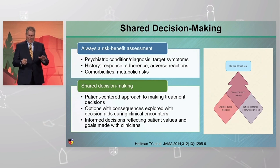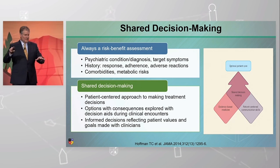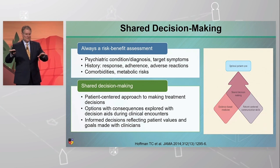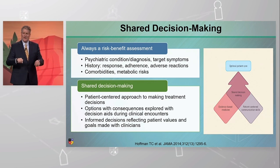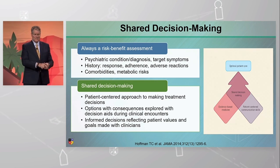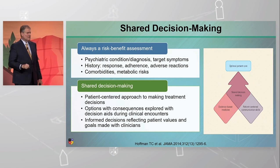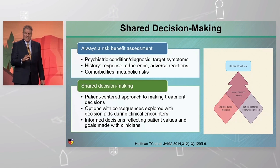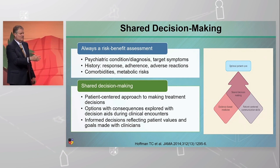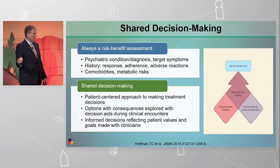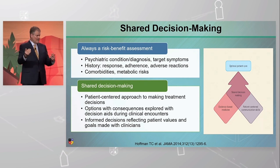So we're always doing a risk-benefit analysis, right? And as we've showed you, there are differences in the risk, particularly for certain kinds of risks, so you're always taking that into account. You want to know certain specific things — what exact condition are we treating? It turns out that patients with schizophrenia tend to be a little more tolerant of certain side effects than mood disorder patients, so that may come into this.